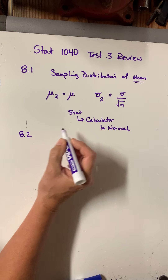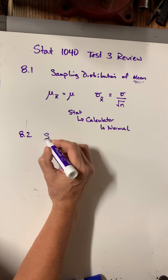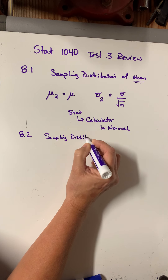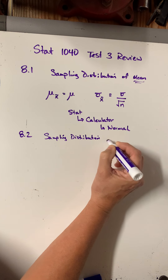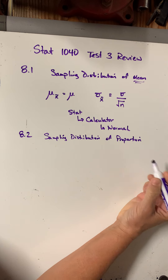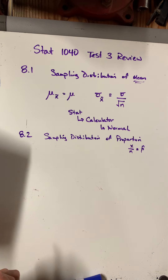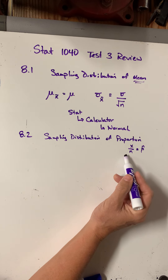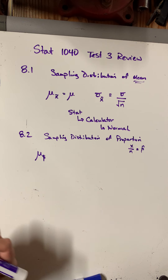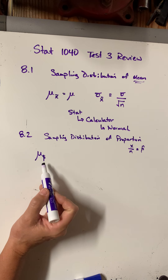In 8.2, it was basically the same thing, but instead of dealing with the mean, it was a sampling distribution of a proportion. A proportion is when you have a certain number out of a whole — and they call this p-hat. So how do you know you're dealing with a proportion? If they use the p-hat symbol, that means they want you to find the mean of the sampling proportion.